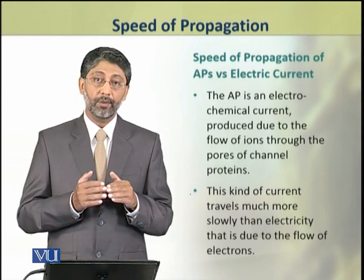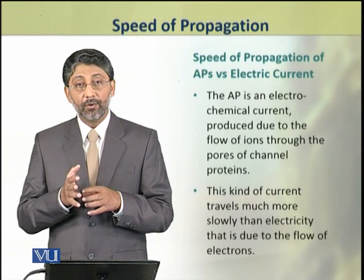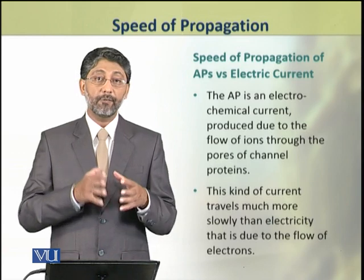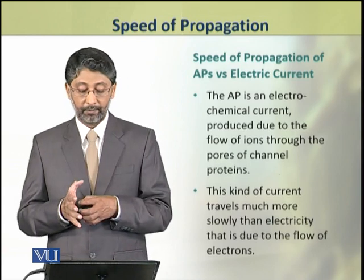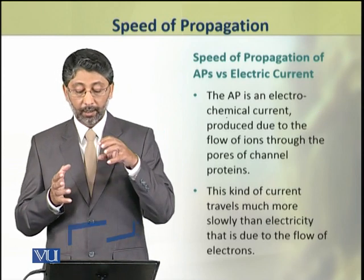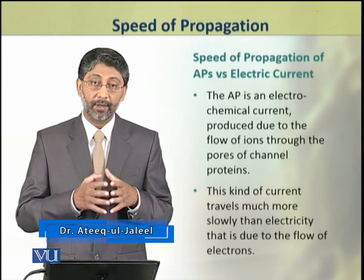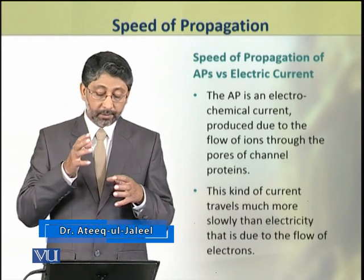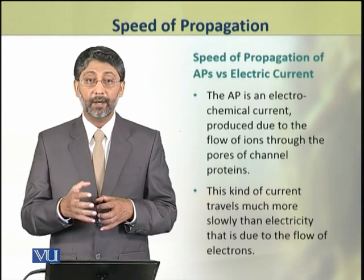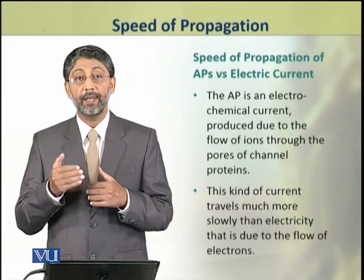You know that action potential is an electrochemical current that is produced because of the flow of ions, which are charged particles, and flow through the ion channel proteins. This kind of current is comparatively slower as compared to the electric current that is produced because of the flow of electrons.